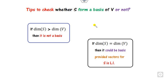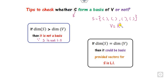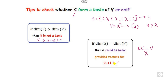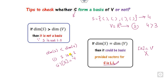To check whether S is a basis: if the dimension of S is greater than the dimension of V, then it is not a basis because S cannot be LI. For example, if the vector space is R³ (dimension 3) but S has 4 elements (dimension 4), since 4 > 3, S is not a basis — no need to check further. If the dimensions are equal, you only need to prove S is LI, and then it is a basis. If dim(S) < dim(V), you must prove both LI and span.